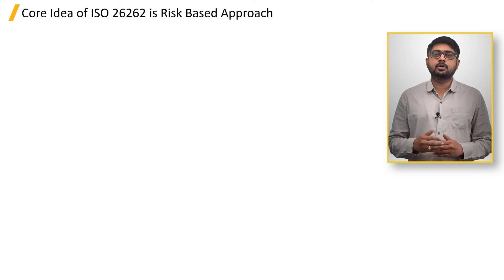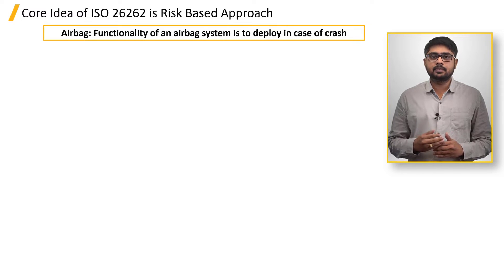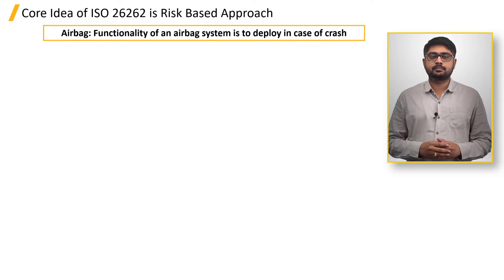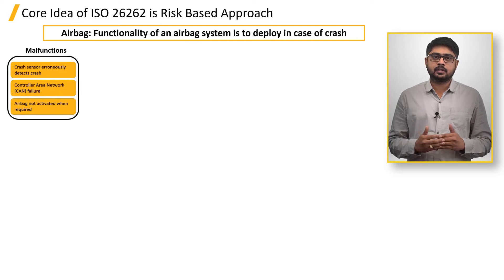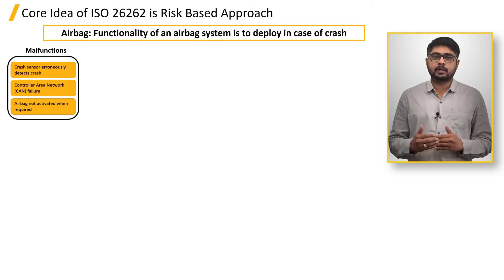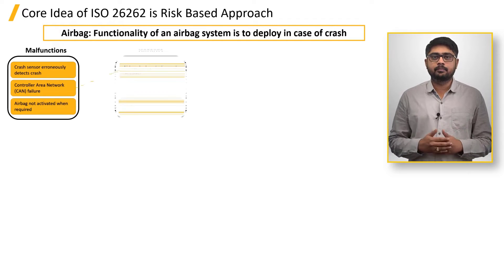Let's take the example of an airbag, which is a safety critical system, and its functionality is to deploy in case of a crash. This system has a malfunction of crash sensor error or CAN failure, leading to a hazard of airbag not deployed, or airbag not activated when required.